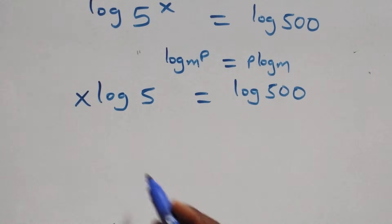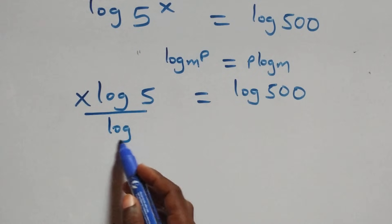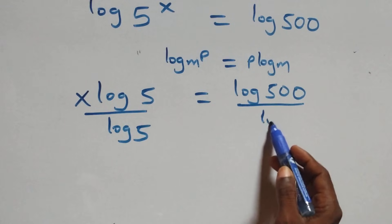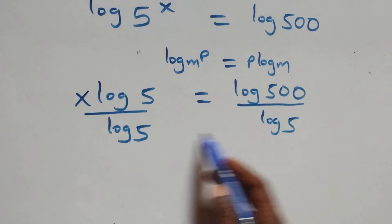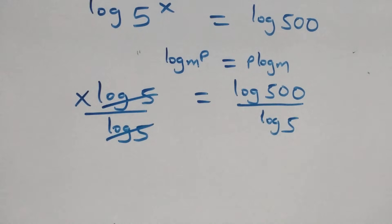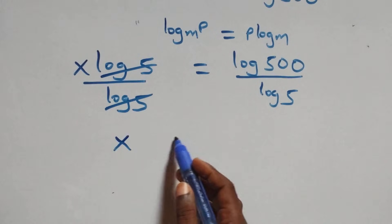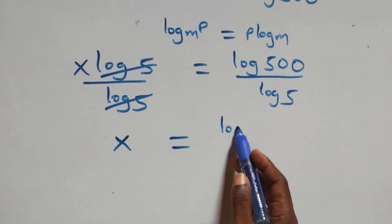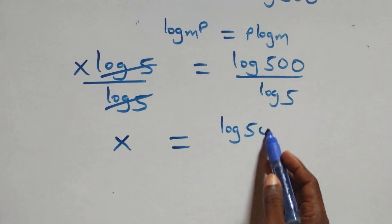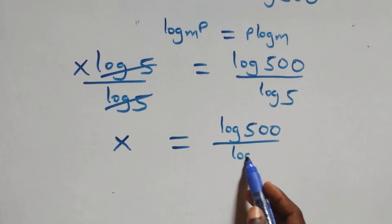We divide both sides by log 5 — divide this side by log 5 and also this side by log 5. Log 5 cancels each other here. We have x equals to log 500 over log 5.